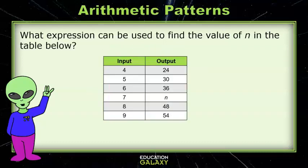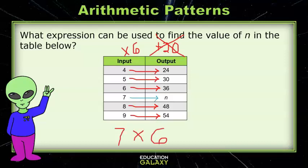Let's try this one. What expression can be used to find the value of n in the table below? Well, to get from 4 to 24, I either have to multiply by 6 or add 20. But to get from 5 to 30, I have to multiply by 6. So the rule must be to multiply by 6. That works for all the values in the table. So to figure out the output of 7, I would need to calculate 7 times 6. That would be my expression.